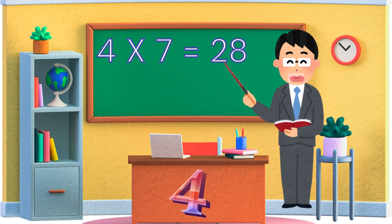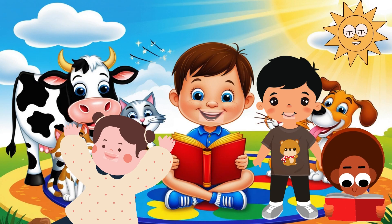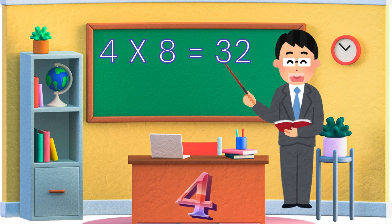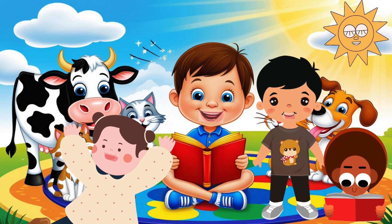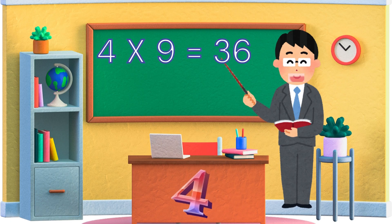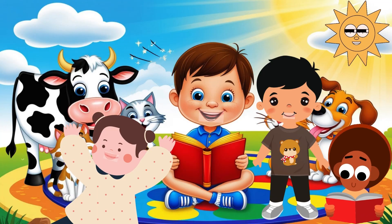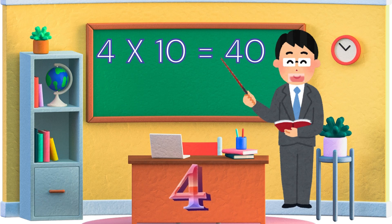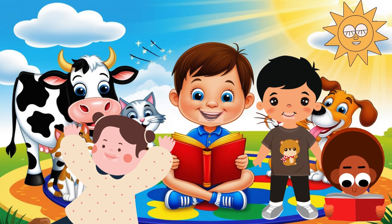4 sevens are 28, 4 eights are 32, 4 nines are 36, 4 tens are 40.